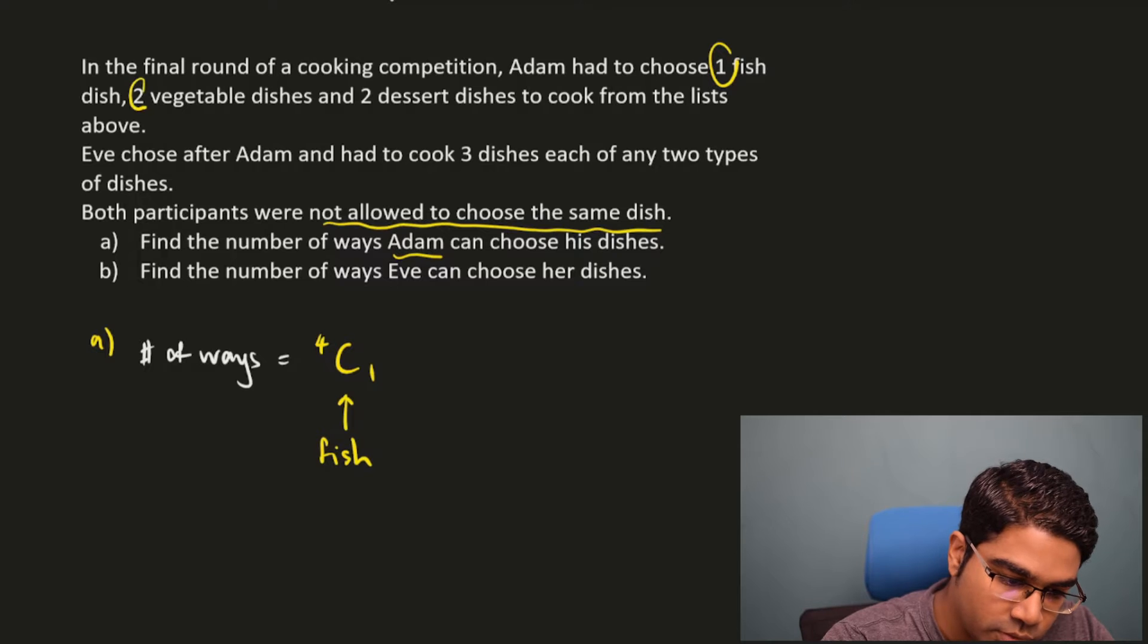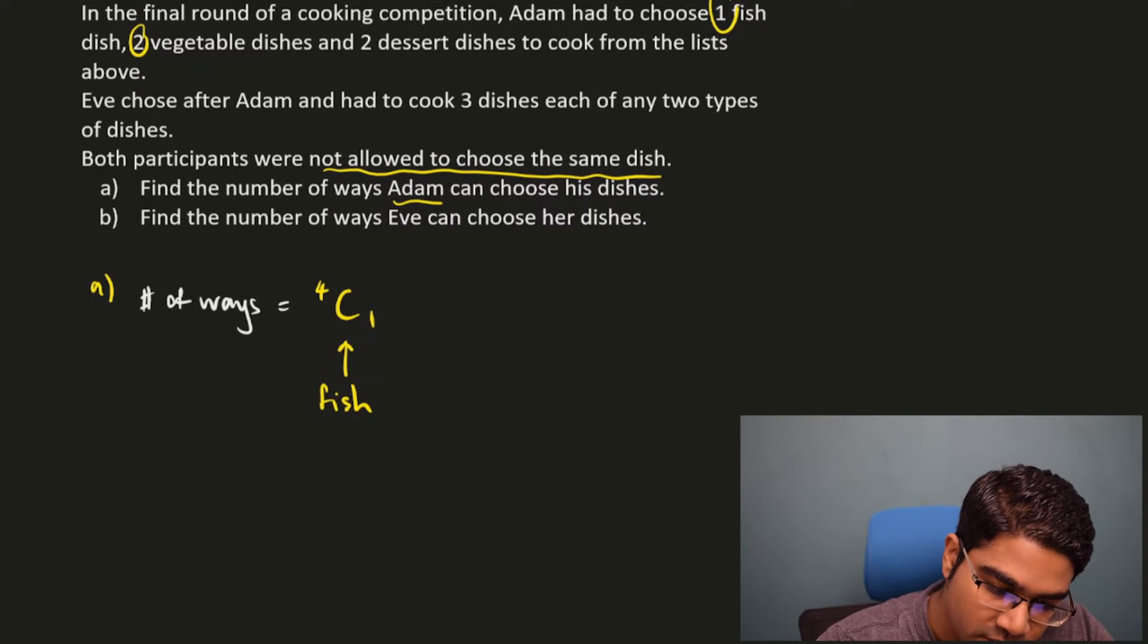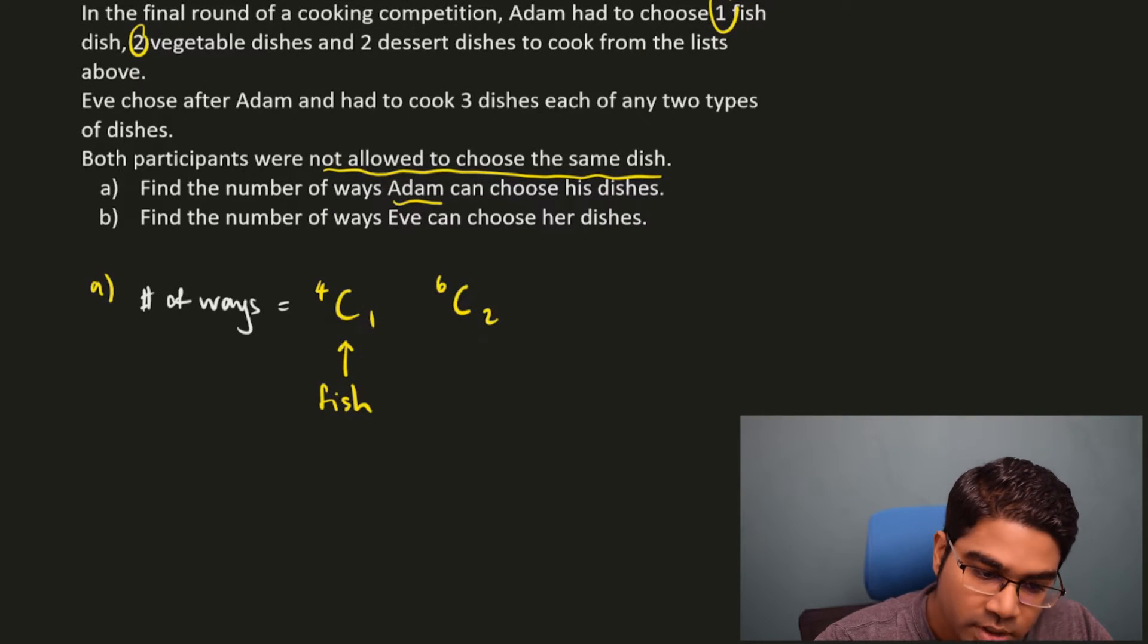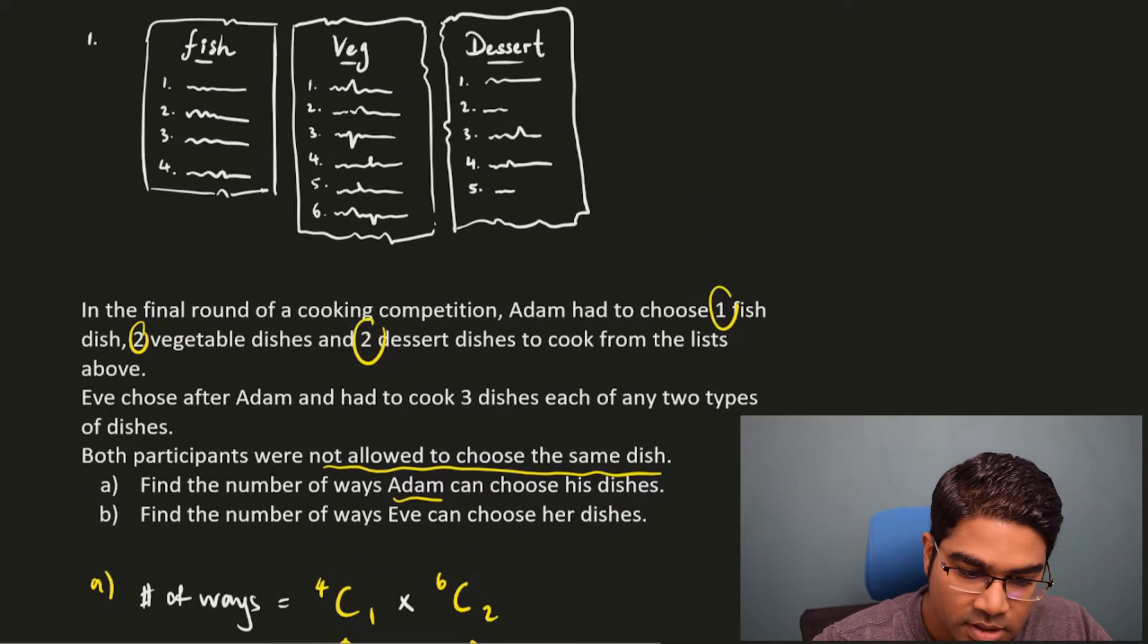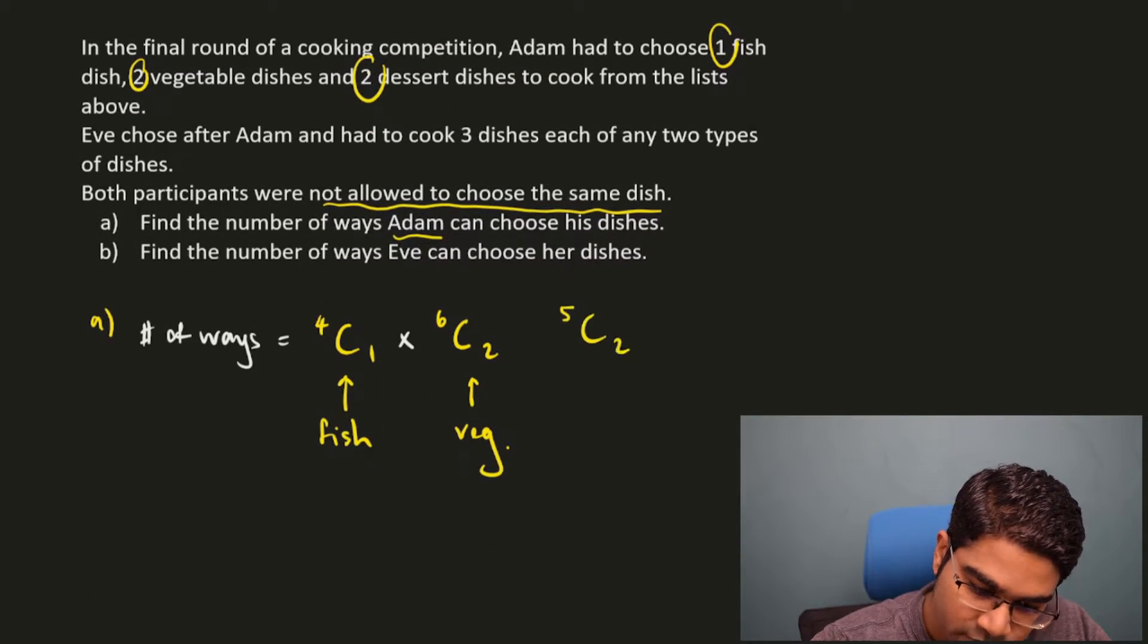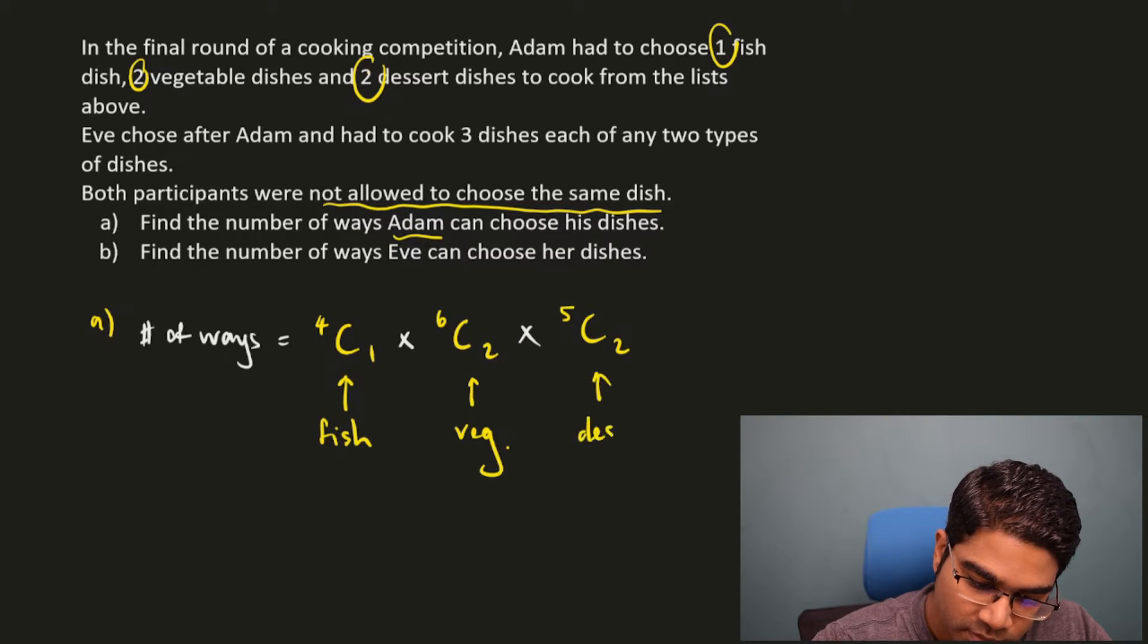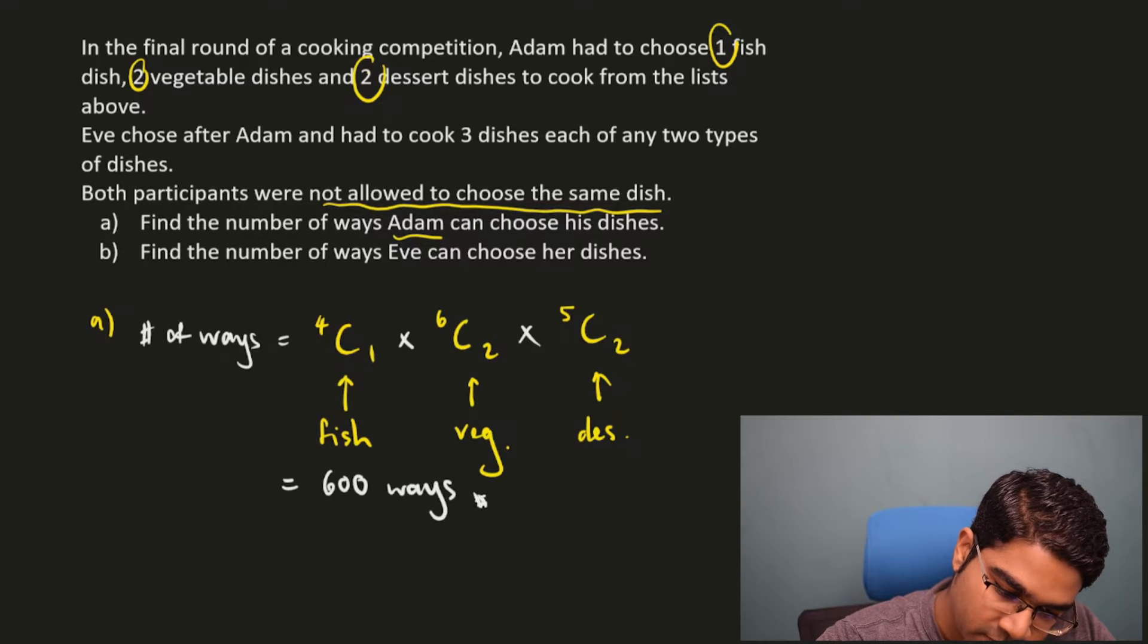And then he needs to choose two vegetable dishes. So for the vegetable dishes, there are six options, which means this will be 6C2. He is choosing two out of six vegetable dishes. So we multiply here for the second choice. And then finally he has to choose two dessert dishes out of a total of five. So this will be 5C2. So the total number of ways that he can choose would be 600. Total of 600 ways.